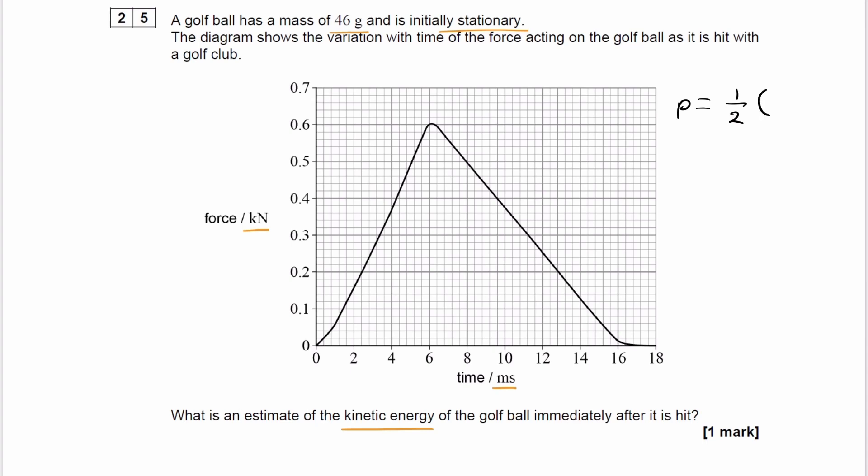The base is 16 milliseconds approximately, about 16 times 10 to the minus 3. And the height is about 0.6 kilonewtons, so 0.6 times 10 to the 3 newtons. Multiply those things together, and we end up with 4.8 newton seconds.